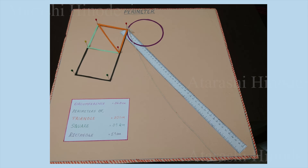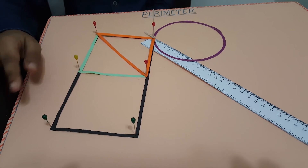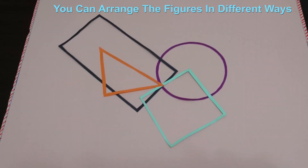Now let's see what perimeters we got. The circumference of the circle is 36.3 cm. The perimeter of the triangle is 33.1 cm. The perimeter of the square is 39.2 cm. And the perimeter of the rectangle is 59 cm. I have arranged the figures in this way, and you can arrange the figures in different ways.